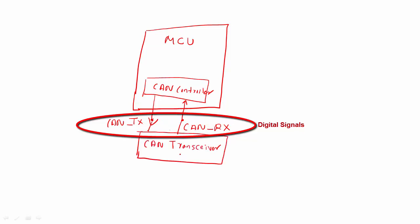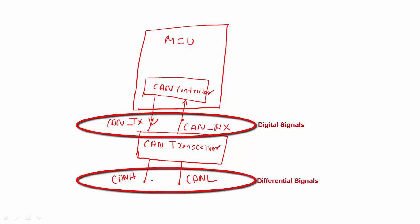CAN transceiver, what it does is, it actually takes single-ended signals and converts into differential signals. That we call as CAN H and another one is CAN L. So, CAN high and CAN low.